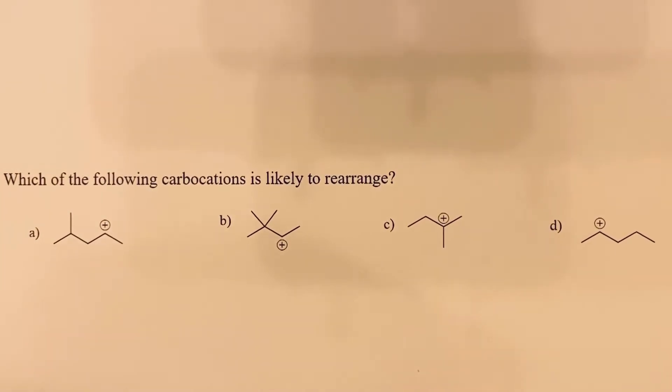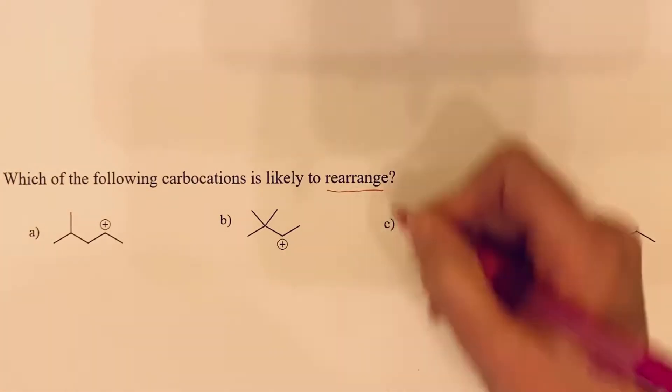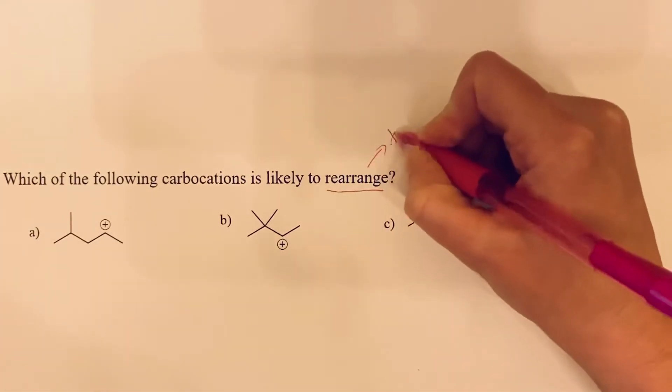Which of the following carbocations is likely to rearrange? To approach solving this problem, we need to understand that a carbocation will rearrange if it can become more stable.